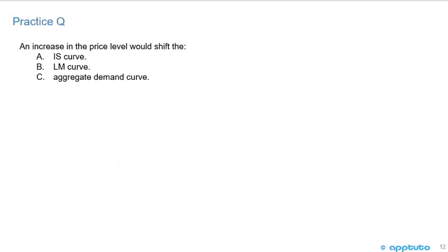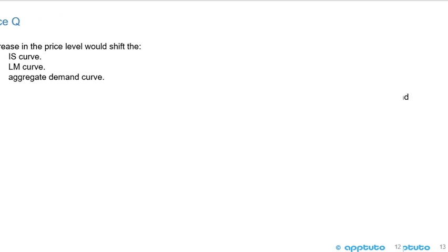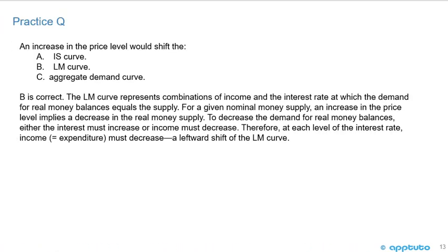Two more practice questions. An increase in the price level would shift — A, the IS curve; B, the LM curve; or C, the aggregate demand curve? B is correct. The LM curve represents combinations of income and the interest rate at which the demand for real money balances equals the supply. For a given nominal money supply, an increase in the price level implies a decrease in the real money supply.